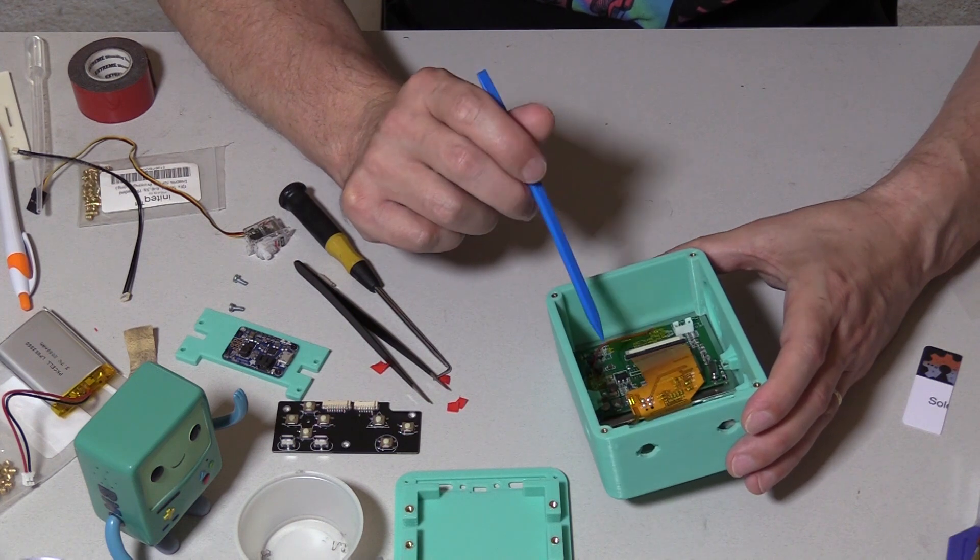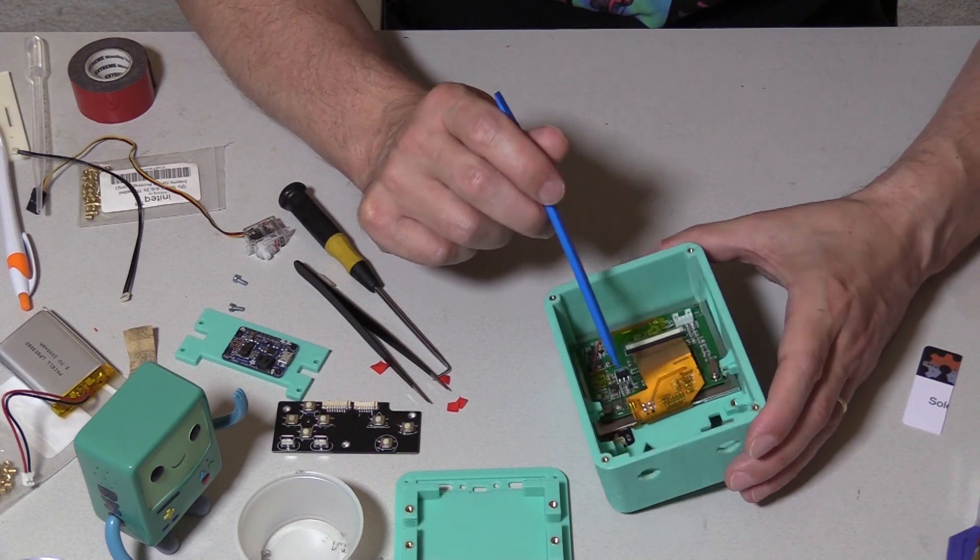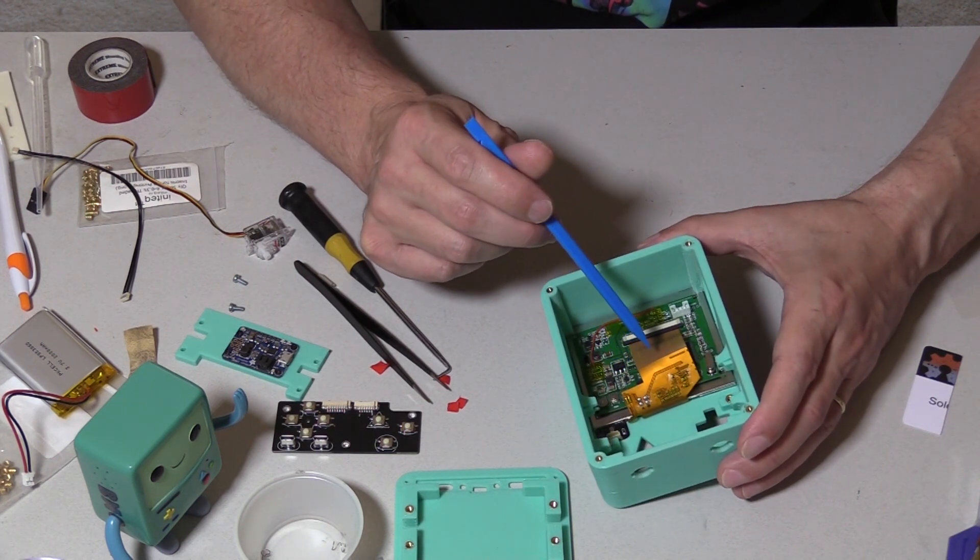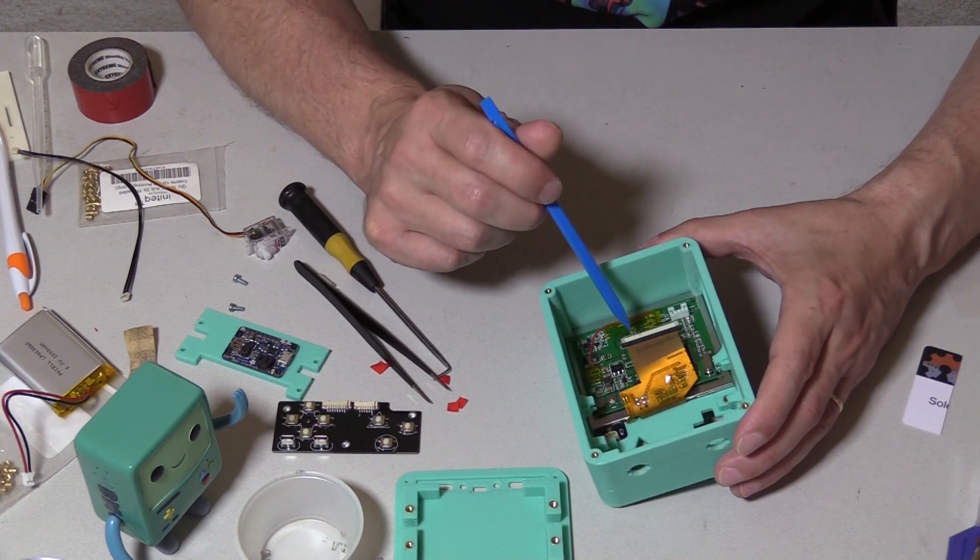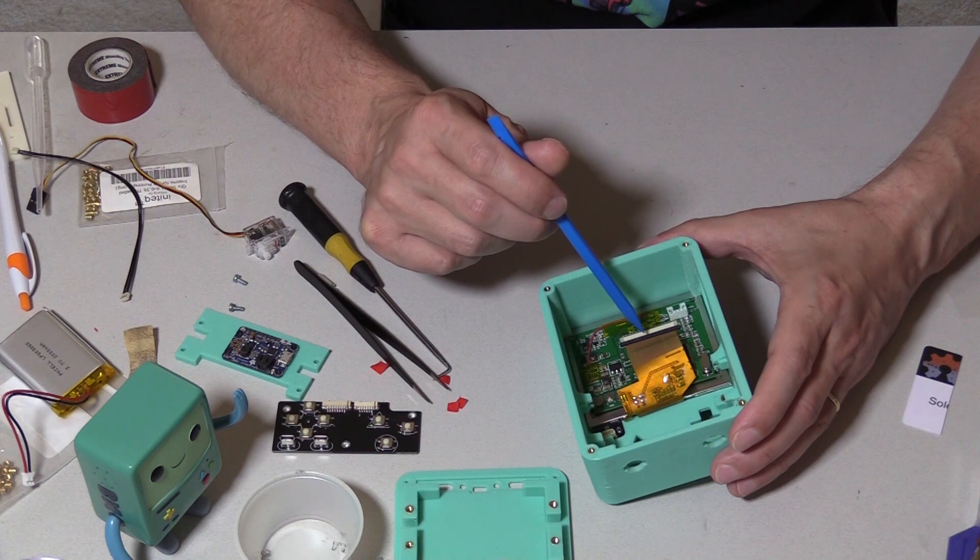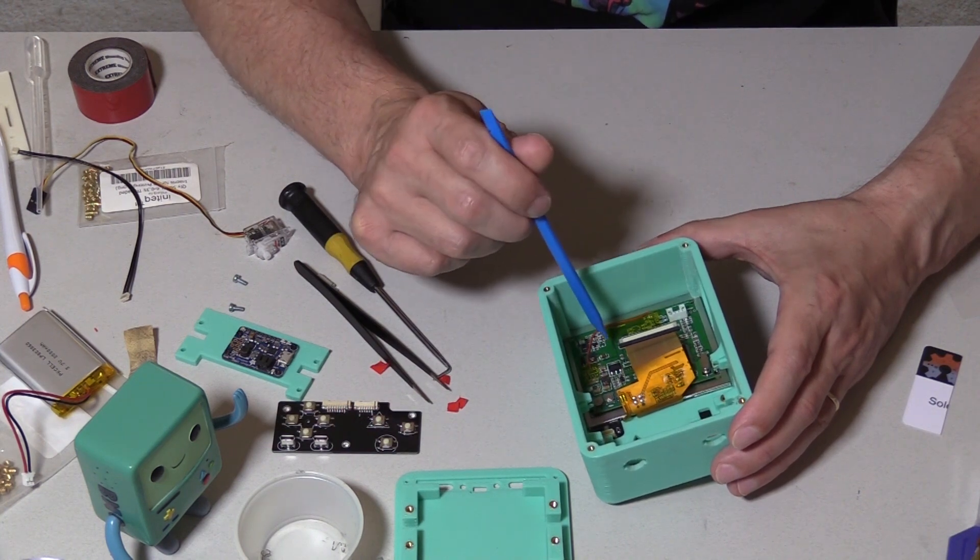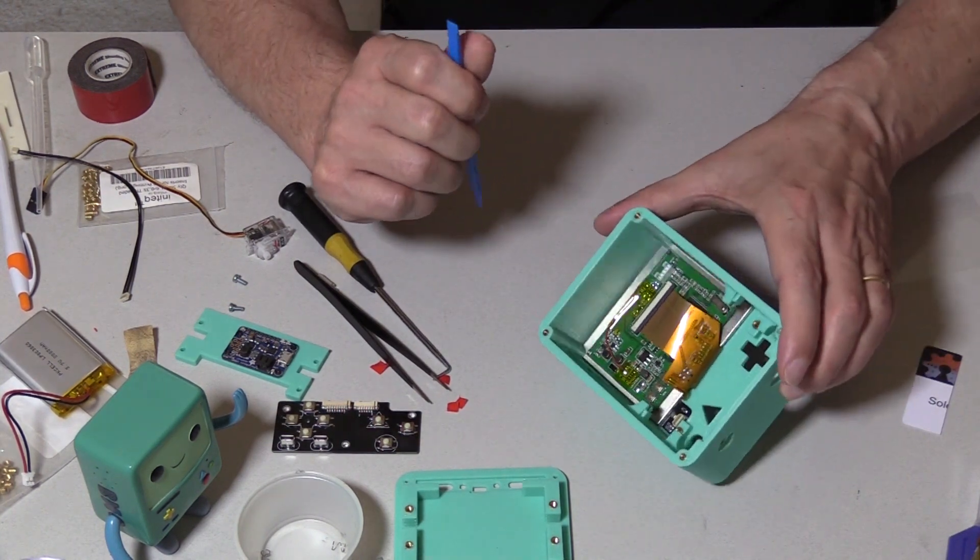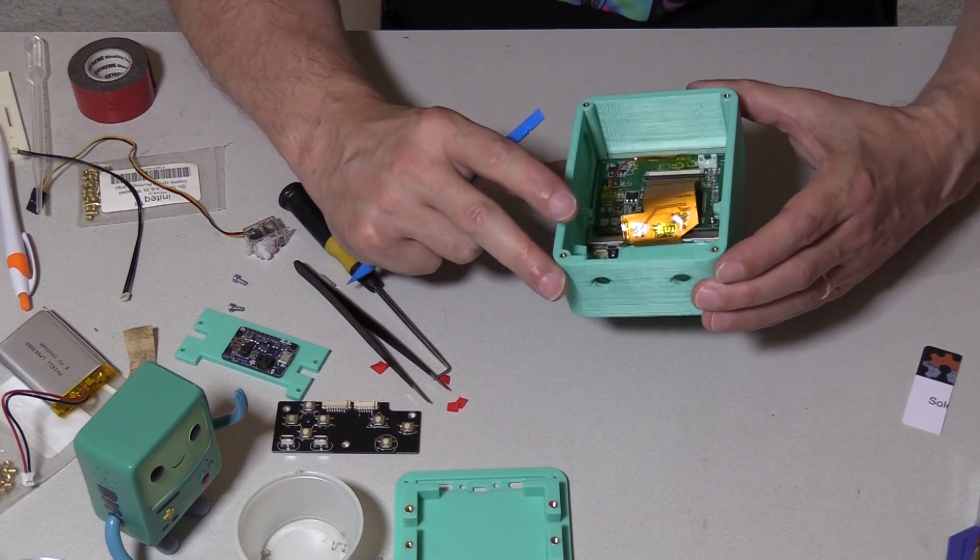But if that happens, it's not the end of the world. This screen is made by some other company, and you can actually order just the screen online and then replace it. I actually did that once I ripped this ribbon cable and I just bought a new screen instead of reordering the whole control board, which can be a little expensive. You can fix it.